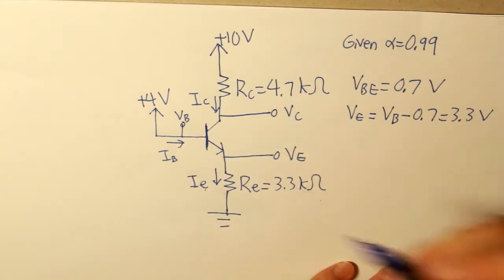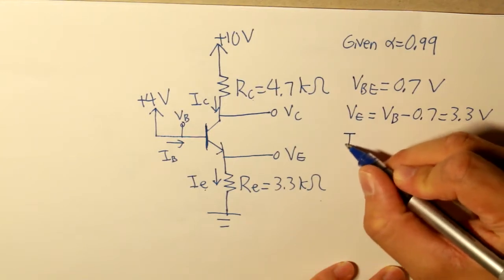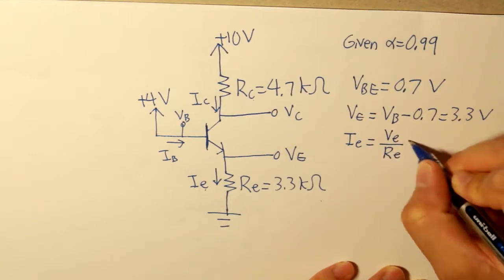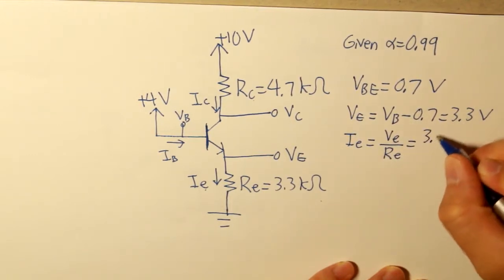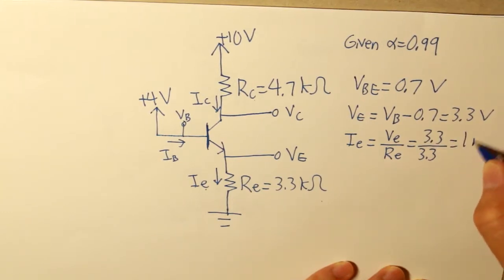Our emitter current will be 3.3 volts, and if we take that 3.3 divided by 3.3 ohms, what we get is 1 milliamp.